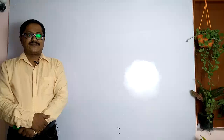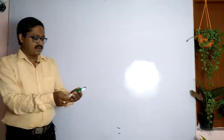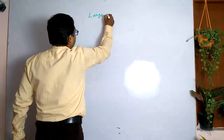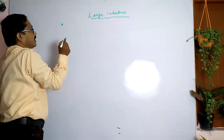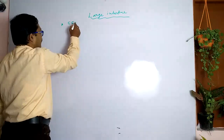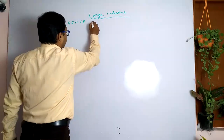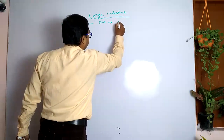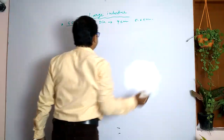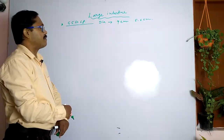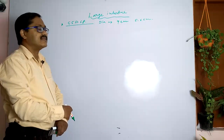The large intestine is the last part of our GI tract and it is the largest portion in diameter. The length of the large intestine is 5.5 to 6 feet. The diameter is 9 centimeters in some portions and 5 to 6 centimeters in other portions.